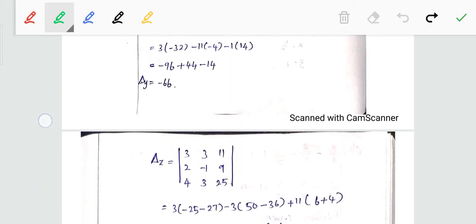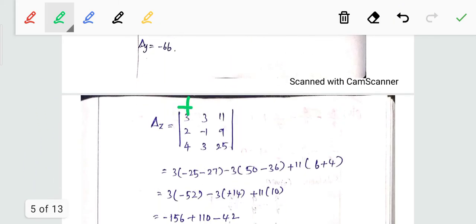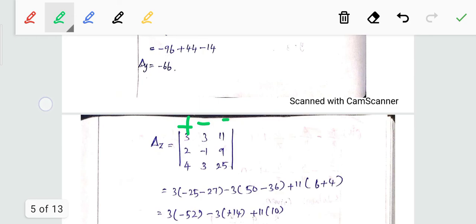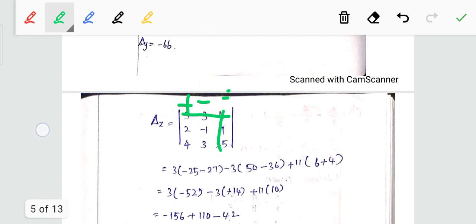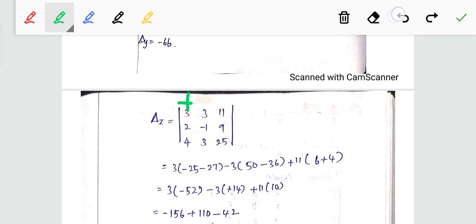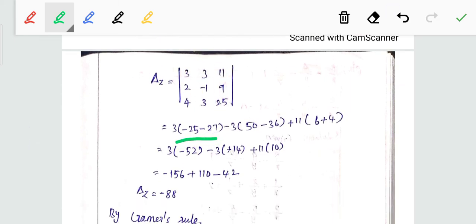Minus 52, 3 into minus 52 is minus 56, 50 minus 36 is 14, 14 into 3 is 42. Then 6 plus 4 is 10, 10 into 11 is 110. So final del z equals minus 88.